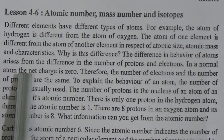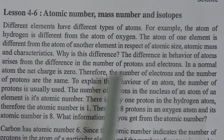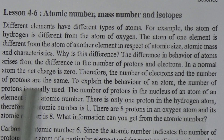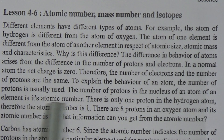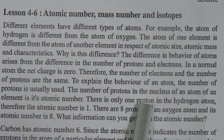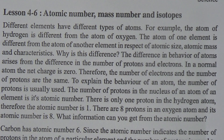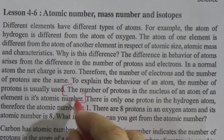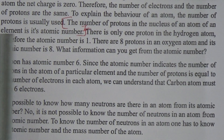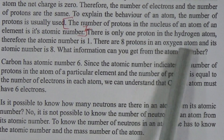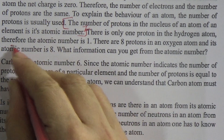In a normal atom, the charge is zero. Therefore the number of electrons and the number of protons are the same. To explain the behavior of an atom, the number of protons is usually used. The number of protons in the nucleus of an atom of an element is the atomic number. There is only one proton in a hydrogen atom, so the atomic number of hydrogen is one. There are eight protons in an oxygen atom, so its atomic number is eight.